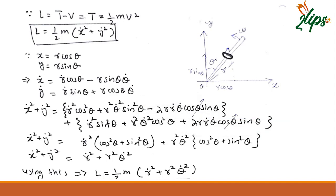From there I can take these things common. These are simple trigonometric relations. From these two terms I can take R dot squared as common, and from the other two terms I can take R squared theta dot squared as common.